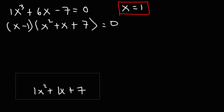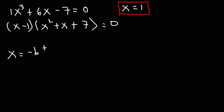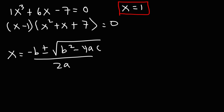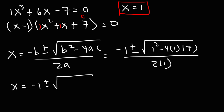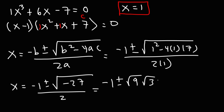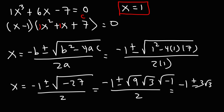We already have the solution x equals 1 for the first factor. For (x squared plus x plus 7), we need to use the quadratic formula. Here A is 1, B is 1, and C is 7. So we get negative 1 plus or minus the square root of 1 squared minus 4 times 1 times 7, over 2 times 1. That gives 1 minus 28 which is negative 27. We can write the square root of negative 27 as the square root of 9 times the square root of 3 times the square root of negative 1. The square root of 9 is 3, and we replace the square root of negative 1 with i.